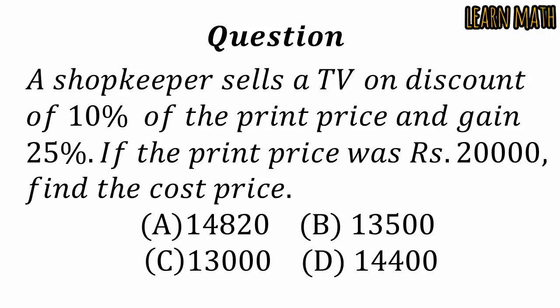A shopkeeper sells a TV on a discount of 10% of the print price and gains 25%. If the print price was rupees 20,000, find the cost price. Option A is 14,820, option B is 13,500, option C is 13,000, option D is 14,400.